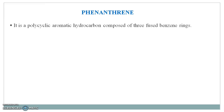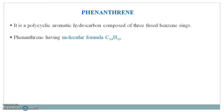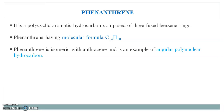Phenanthrene is a polycyclic aromatic hydrocarbon composed of three fused benzene rings, having molecular formula C14H10. Phenanthrene is isomeric with anthracene and is an example of an angular polynuclear hydrocarbon.